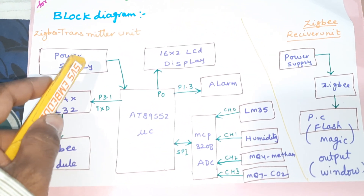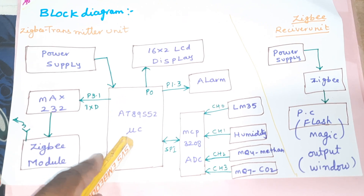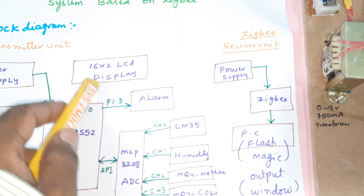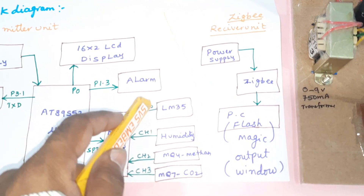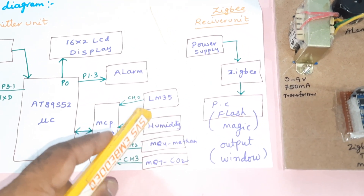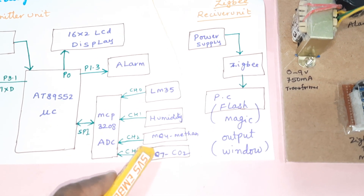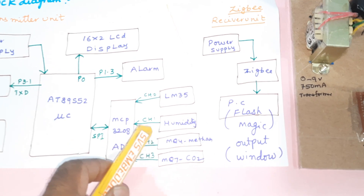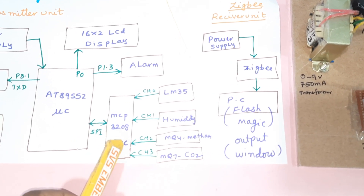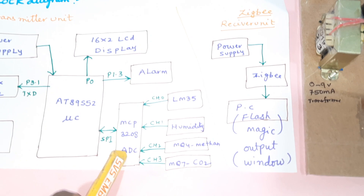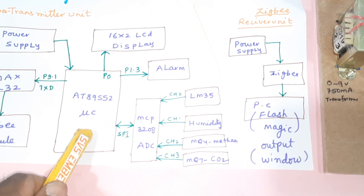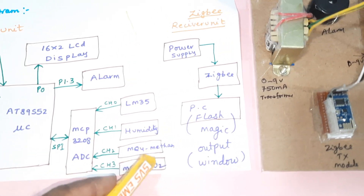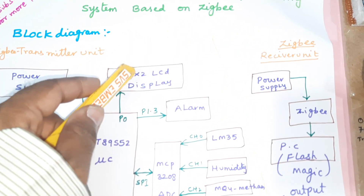The transmitter module consists of a 9-volt transformer, an 8051 microcontroller, a ZigBee transmitter module, a 16x2 LCD display, and one alarm. We are using four sensors: LM35 temperature sensor, humidity sensor, methane gas sensor, and CO2 carbon monoxide sensor. These are connected to the MCP3208 ADC — a successive approximation 12-bit ADC IC — connected to port 0, channels 0 through 3. All the data is updated on the LCD.